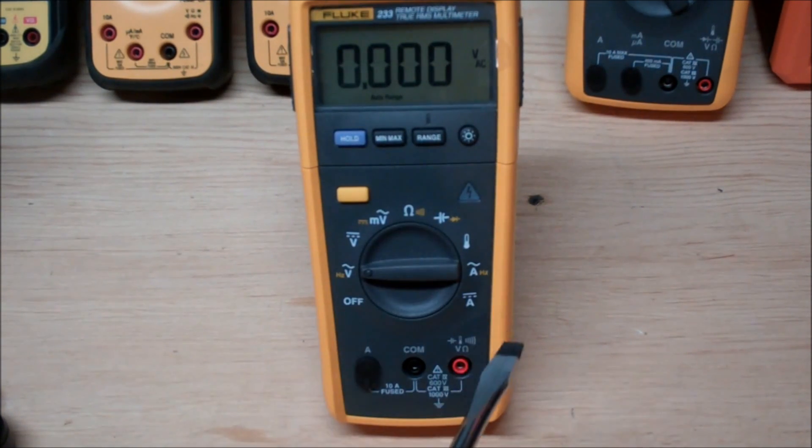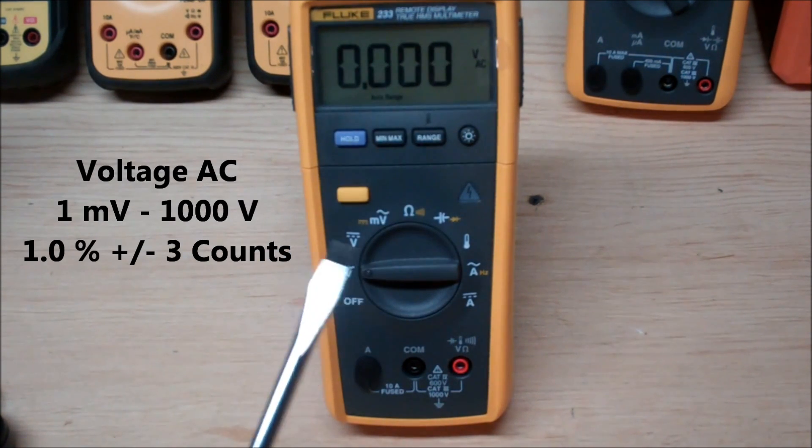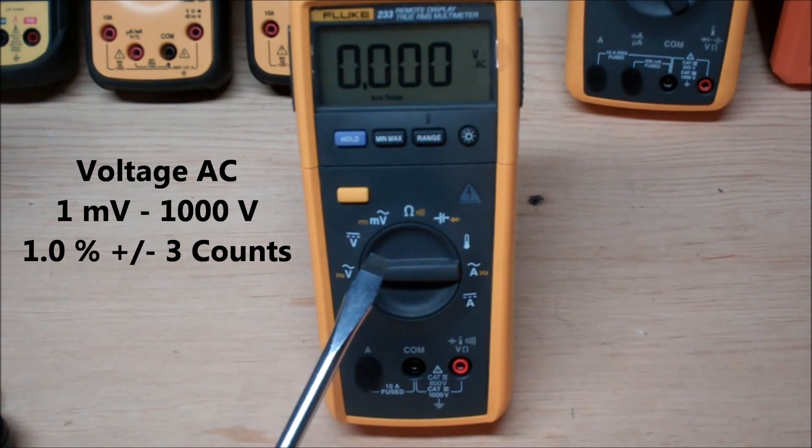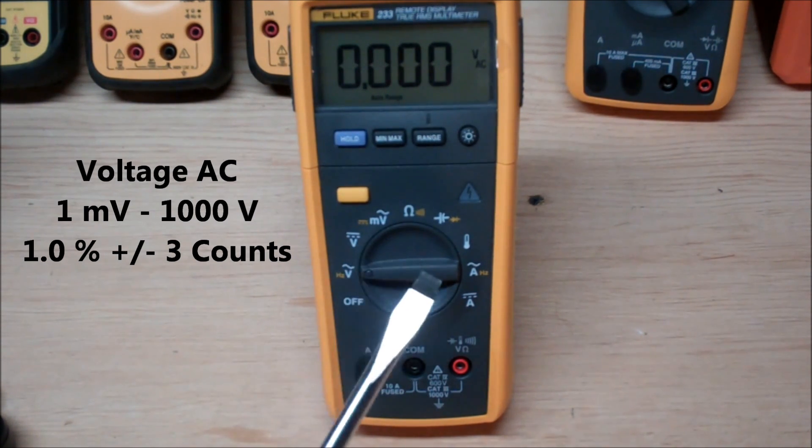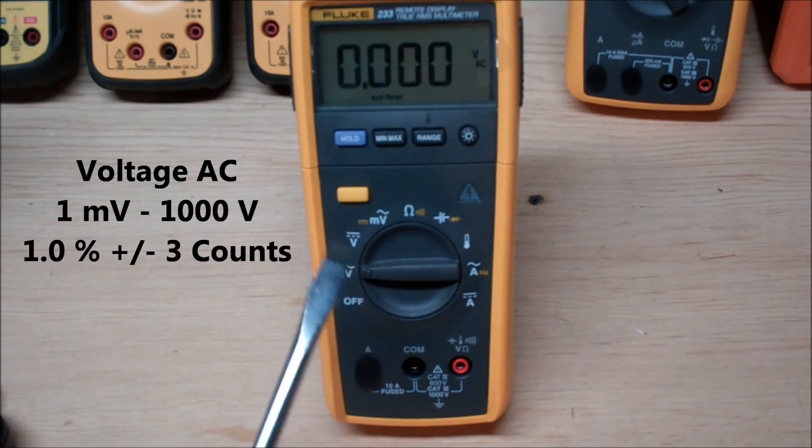So now I just want to go through all the measurement capabilities this unit has. The first one we're going to start off is the AC measurement. Now this is a true RMS meter which is always a nice feature, it's going to give you really high accurate ratings. And the accuracy of this is one percent plus or minus three counts and its range is from 0.1 millivolts to 1000 volts.